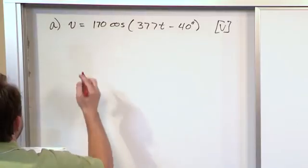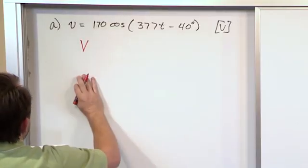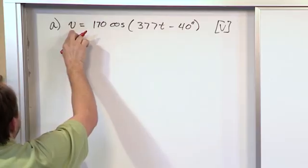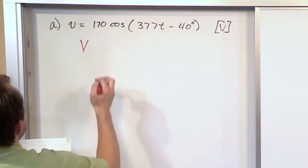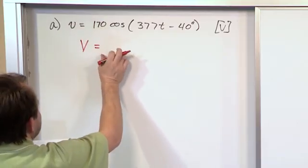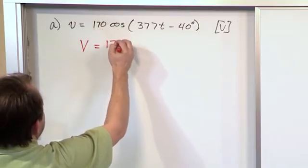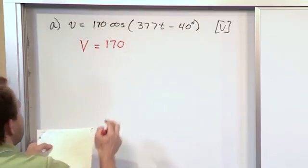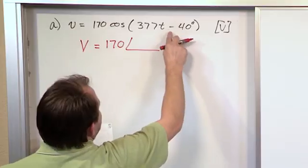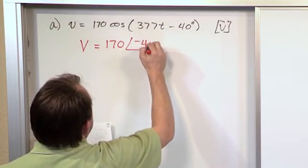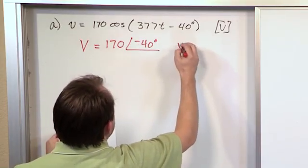All you have to do is say capital V. Capital means phasor representation of whatever I'm talking about. It's an amplitude which is right here, given to us already right in front of the cosine, at an angle of whatever the phase is, negative 40 degrees. And you put the unit as volts.